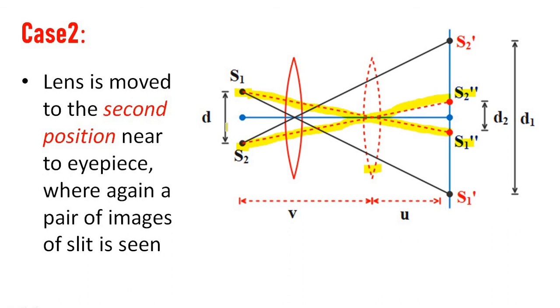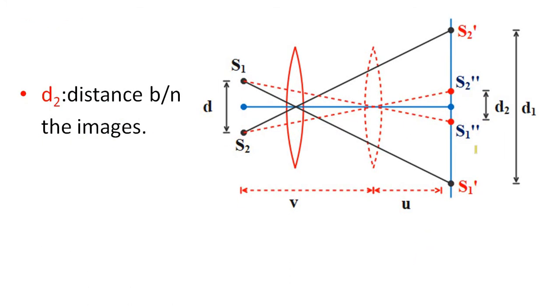The distance of separation between S1 and S2 is D. The distance of separation between S1 double prime and S2 double prime is D2.